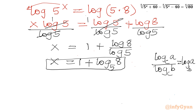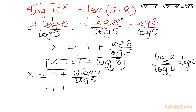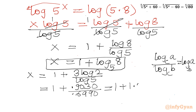Using a calculator: log 8 equals 3·log 2 equals 3 × 0.3010 equals 0.9030, and log 5 equals 0.6990. So x equals 1 plus 0.9030 divided by 0.6990, which is approximately 1 plus 1.29, giving the final answer x approximately equals 2.29.